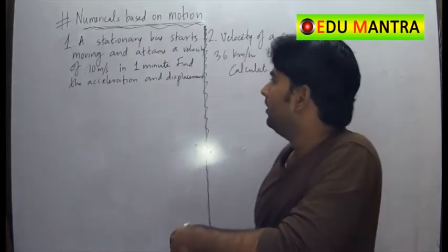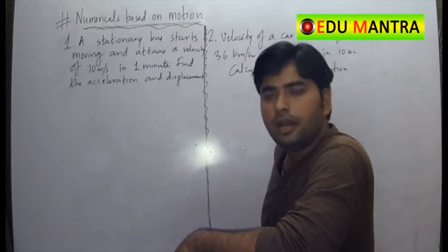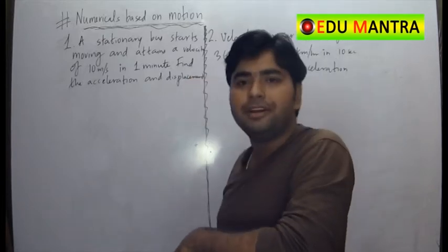The first question is: a stationary bus starts moving and attains a velocity of 10 meter per second.